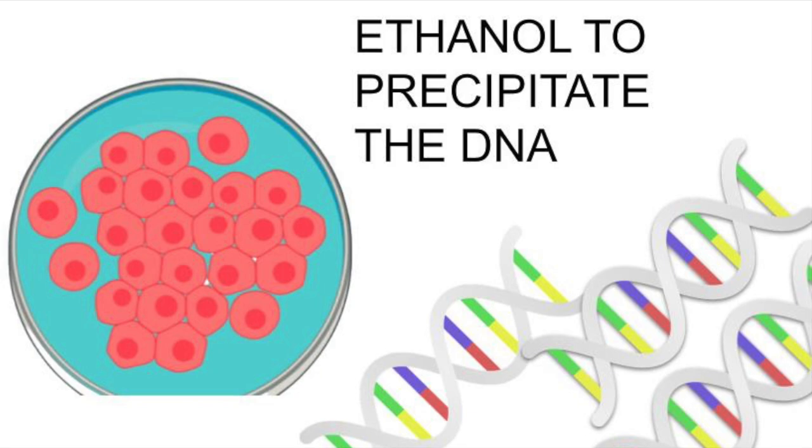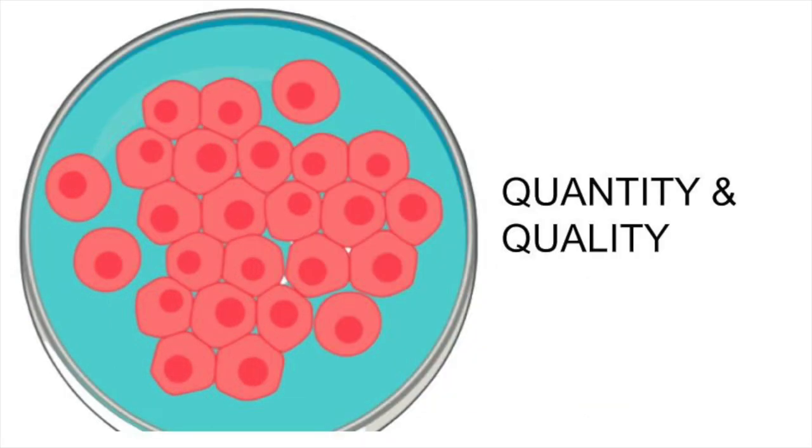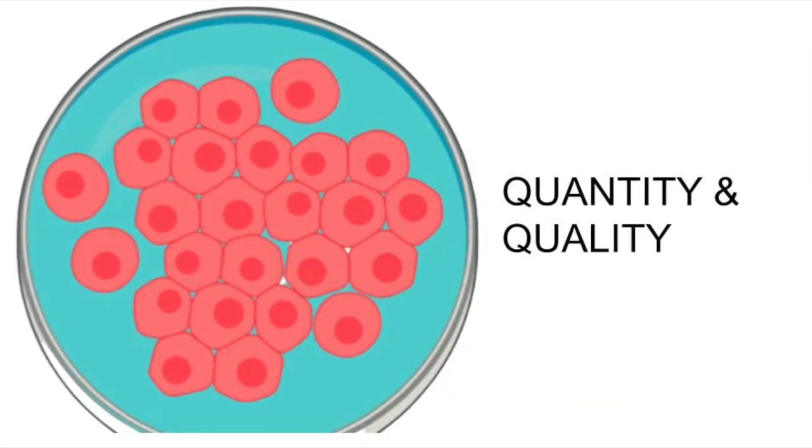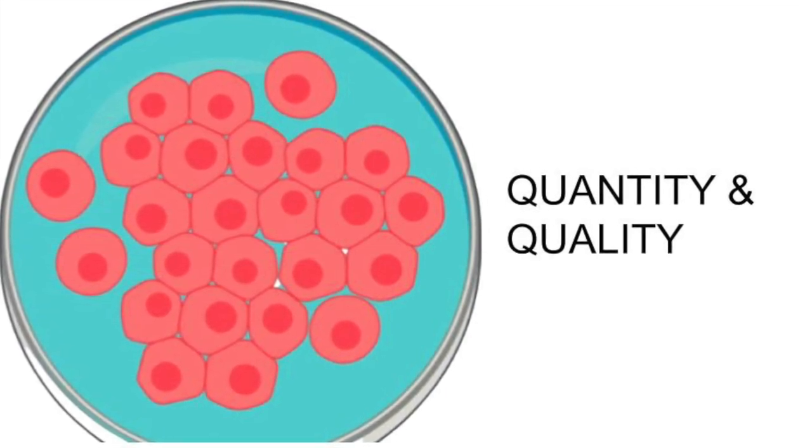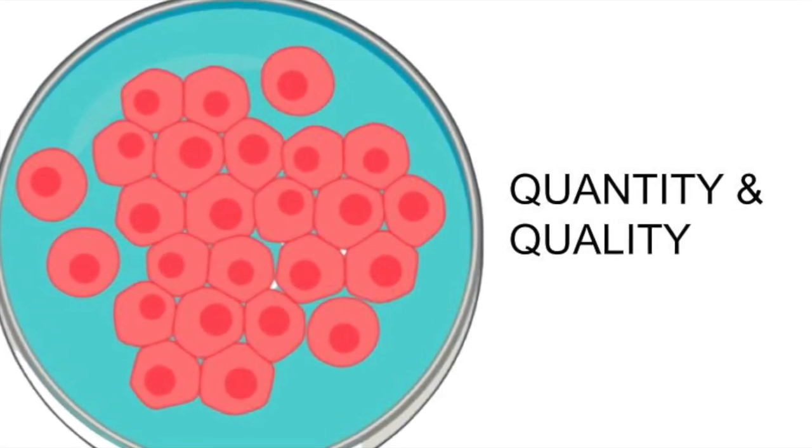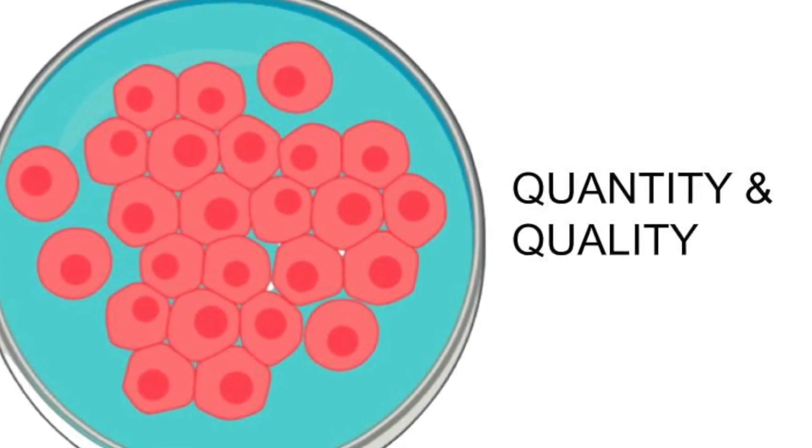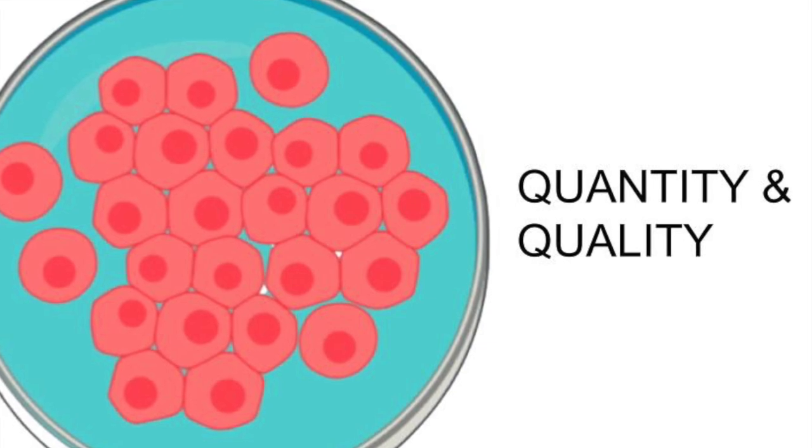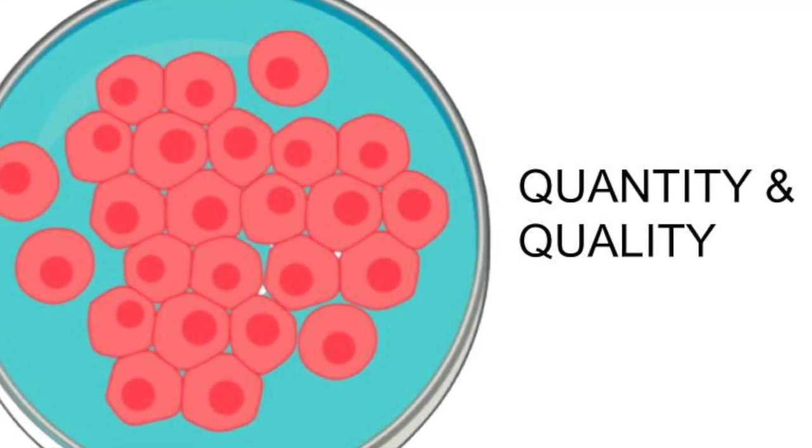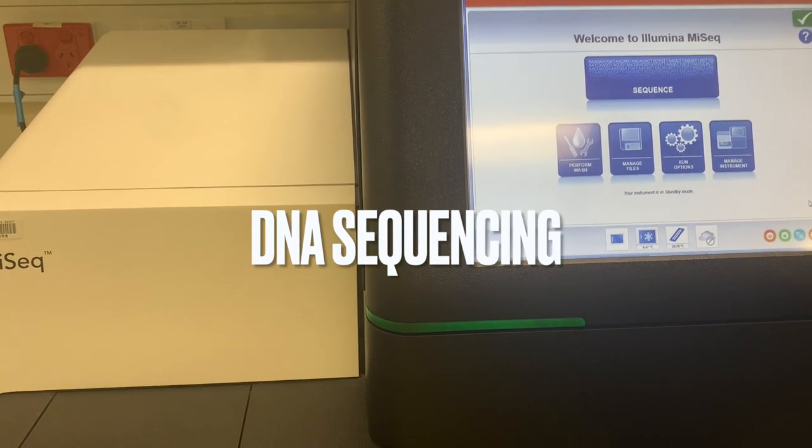Finally, the DNA is resuspended in a small volume of molecular or double-distilled water, or a buffer that contains a little bit of Tris and EDTA. This allows you to have a more concentrated nucleic acid for use in other applications such as PCR, sequencing, or whatever you need the DNA or RNA for.